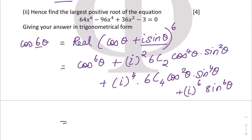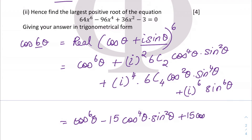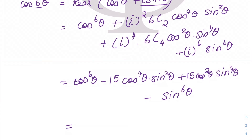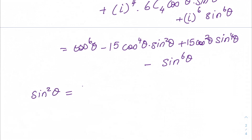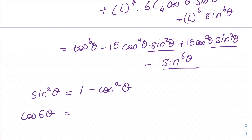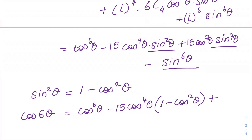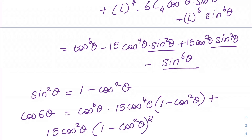When you expand this out you will get cos⁶θ minus 15cos⁴θ · sin²θ plus 15cos²θ · sin⁴θ minus sin⁶θ. Now we are going to use the identity sin²θ = 1 − cos²θ to replace all the sine terms with cos. So we have cos 6θ equal to cos⁶θ minus 15cos⁴θ · (1 − cos²θ) plus 15cos²θ · (1 − cos²θ)² minus (1 − cos²θ)³.